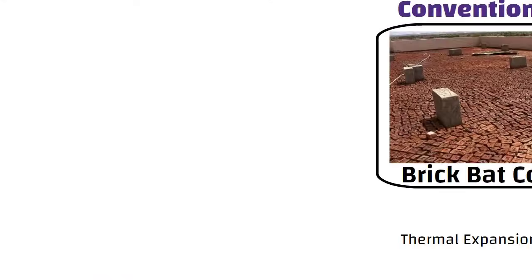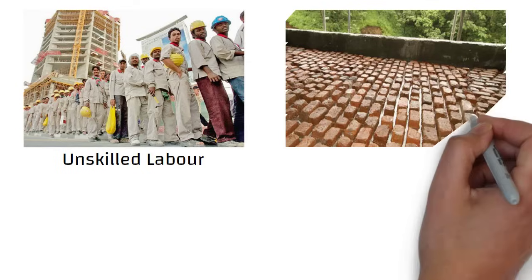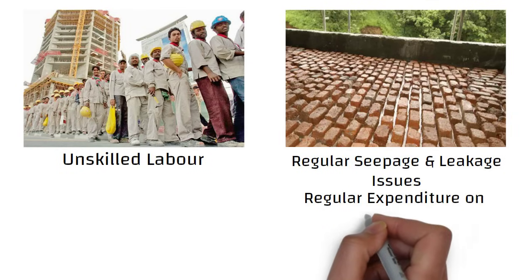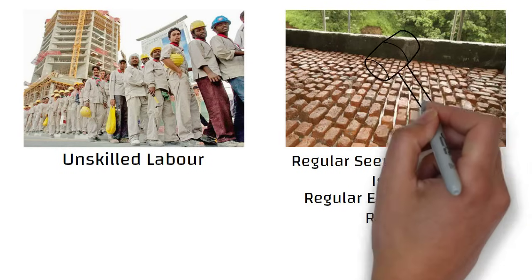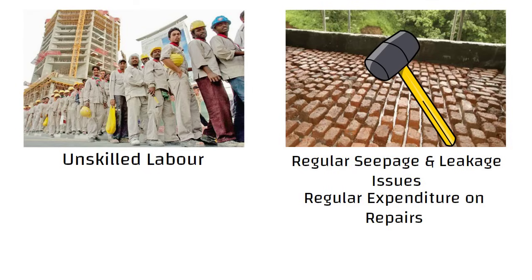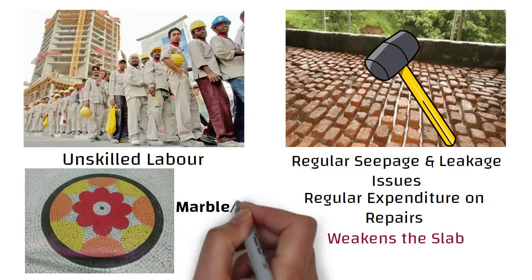Besides, very often the manpower used for laying of these materials is unskilled. In case of terrace areas, use of such conventional methods of waterproofing means regular seepage and leakage issues and regular expenditure on repairs. In addition, breaking of the old layer of waterproofing to repair it also weakens the slab. It requires marble or china mosaic on it, so ultimately it increases load on the structure.